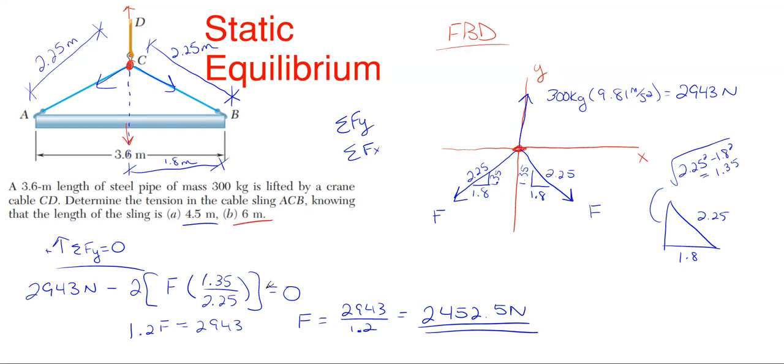The second one is utilizing 6 meters. So really, what changes here is that this dimension for the 2.25 changes and our 1.35 changes as well. The 1.8 does not change and the original force from the pipe weight of 2943 newtons does not change either.